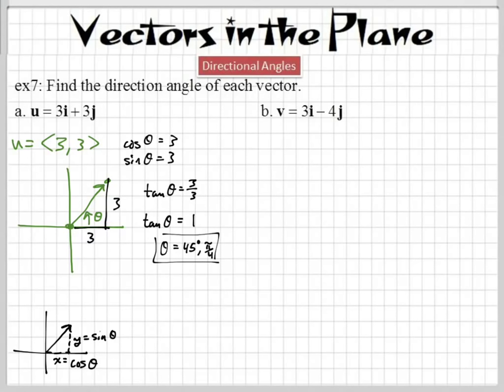Someone asked a good question, and it was because there's another angle where tangent equals 1. There's this angle right here, which is in the first quadrant, but there's also this angle over here, which is in the third quadrant, right? Okay, this angle right here would be 180 degrees plus 45, so that would be 225, right? So this would be 225 right here.